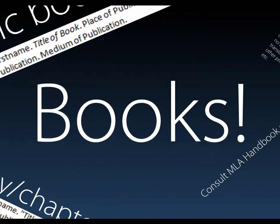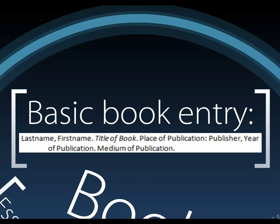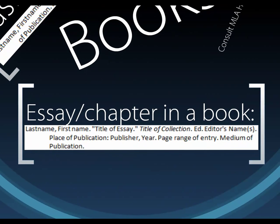For books in your Works Cited list, a basic book entry uses hanging indentation and starts with the author's last name and first name, then the title of the book in italics, then the publication information, and the medium of publication. If you're citing an essay or chapter in a book, you include the last name and first name of the essay's author, then the title of the essay, the title of the book it's in, the editor's name, and then the publication information and format.